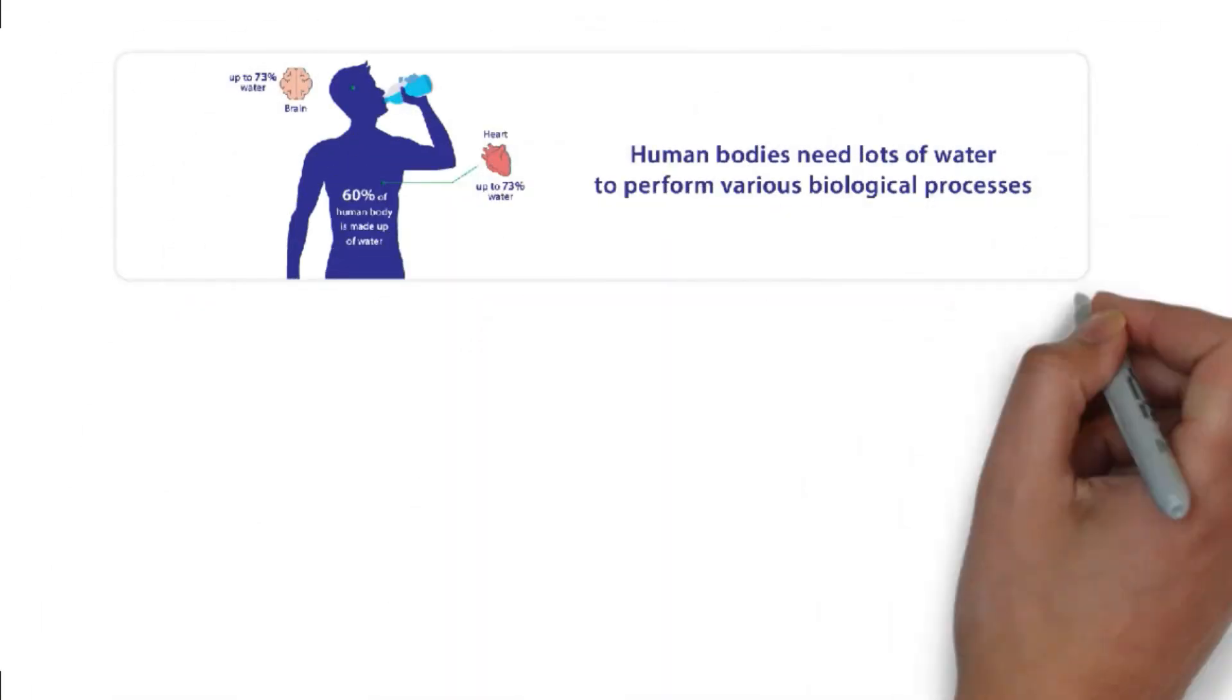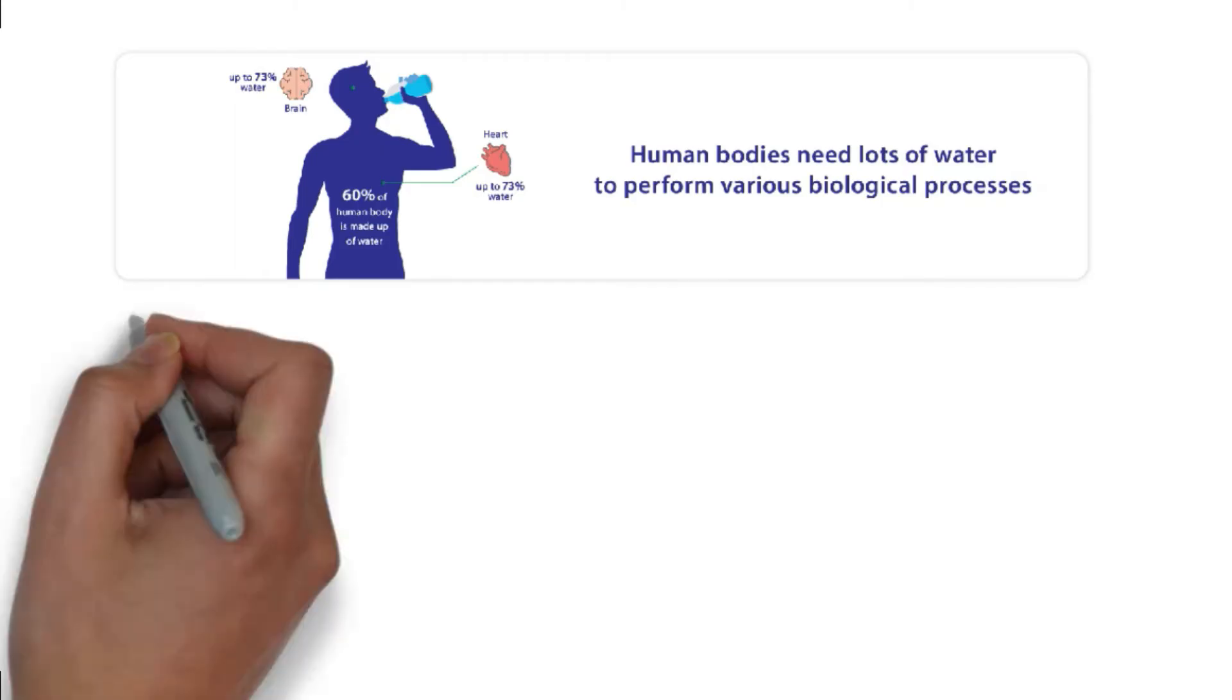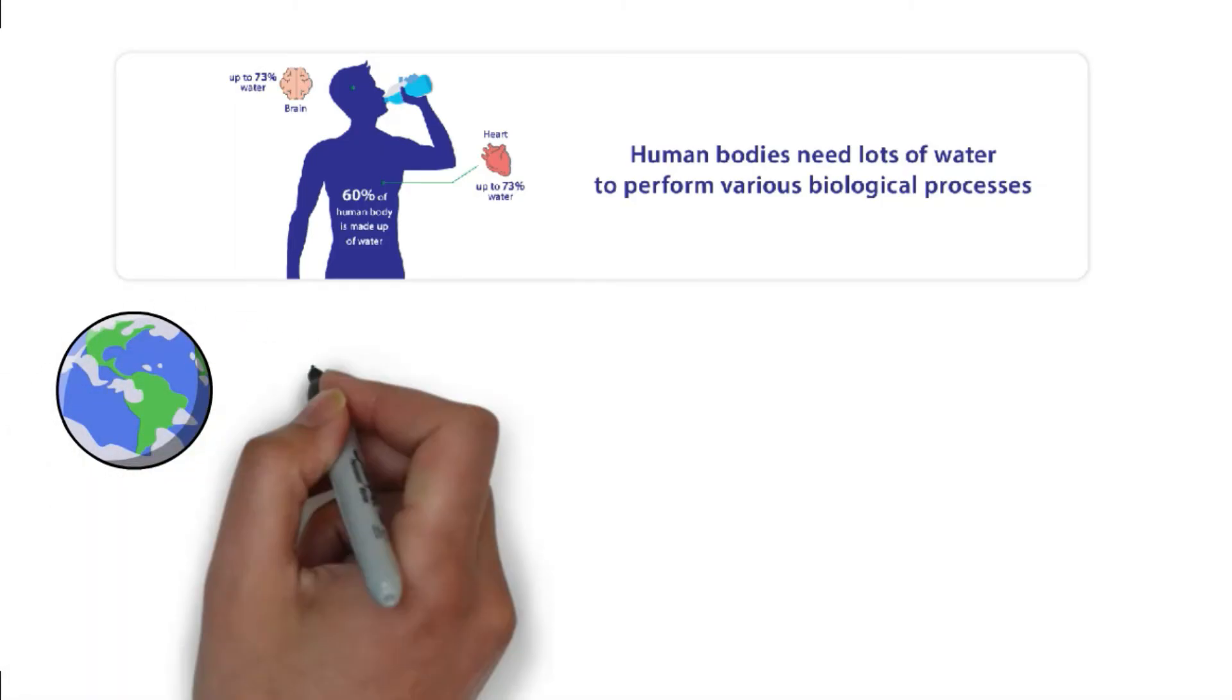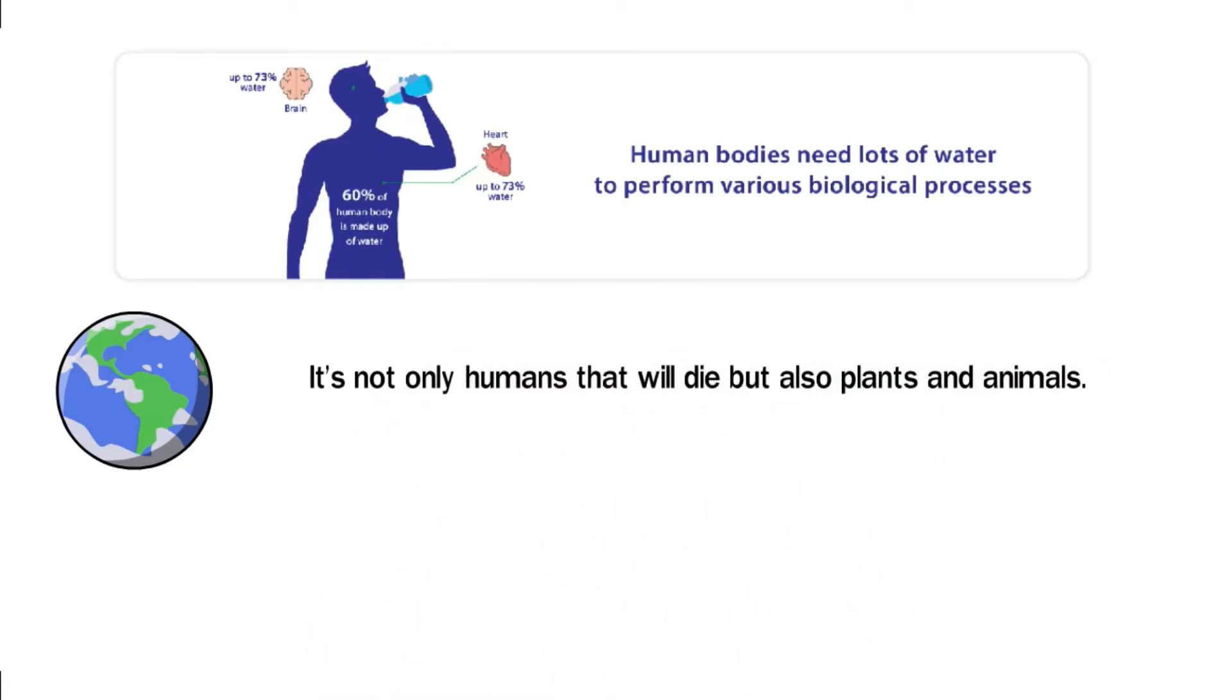Crucial organs of the body like the heart and the brain contain up to 73% water. As you can see, without water life will cease to exist on our planet. It's not only humans that will die but also plants and animals. Thanks to the water cycle, all life forms on Earth can get water whenever they need it.